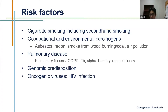Genomic predisposition has not been well understood, but there are certainly families where lung cancer happens more commonly. Our understanding will improve with more studies on this topic. We also talk about oncogenic viruses, including HIV infection — with HIV, your risk of essentially any cancer goes up, including lung cancer. But lung cancer is not an AIDS-defining cancer.